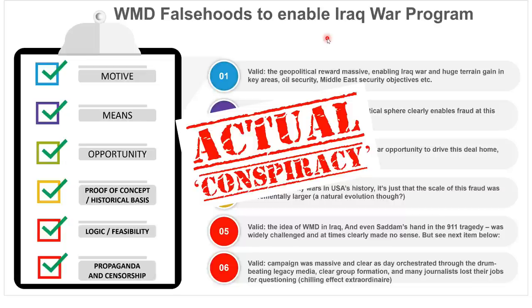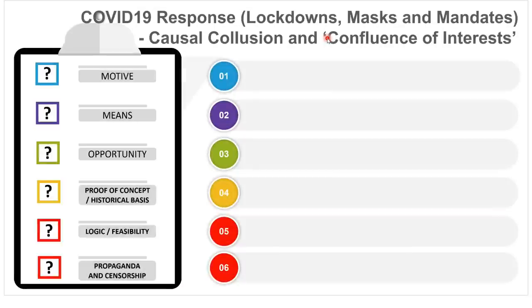Now we go to something much more current to really test this checklist — you might disagree with some of my conclusions, but I'll provide all the context so you can decide if the checklist is a real winner. COVID response. We're very specific: the putative conspiracy is the lockdowns, masks, mandates and the whole thing over the last couple of years. Was there causal collusion, a confluence of interests — essentially a conspiracy to drive this pandemic on behalf of the pandemic industry? That's what we're testing.